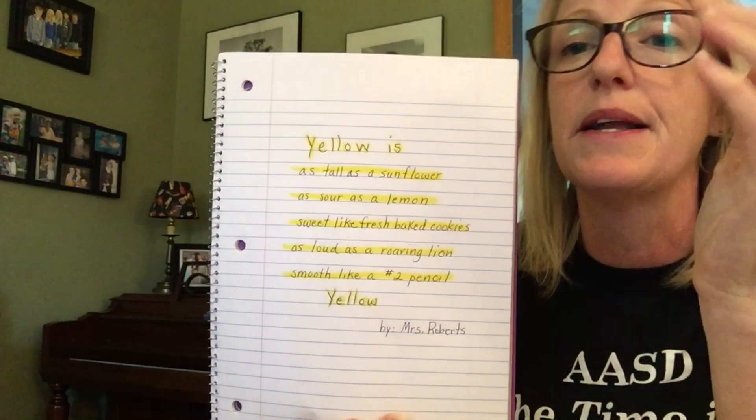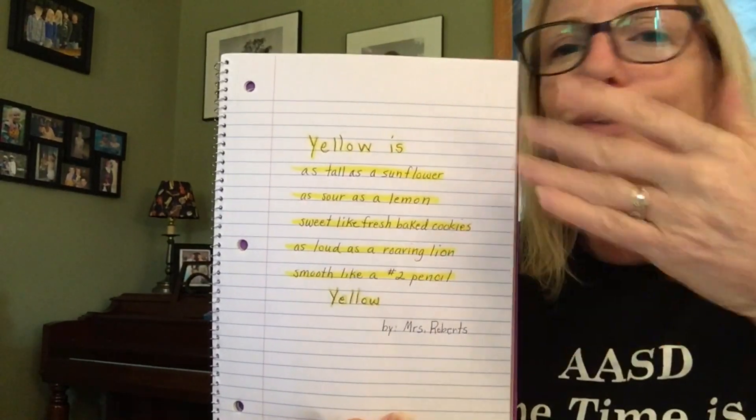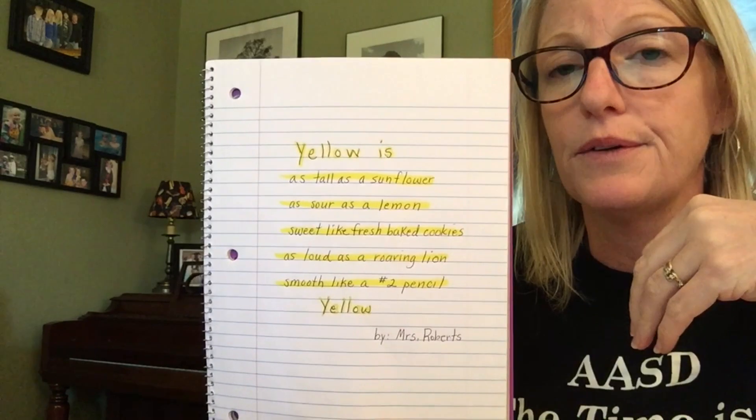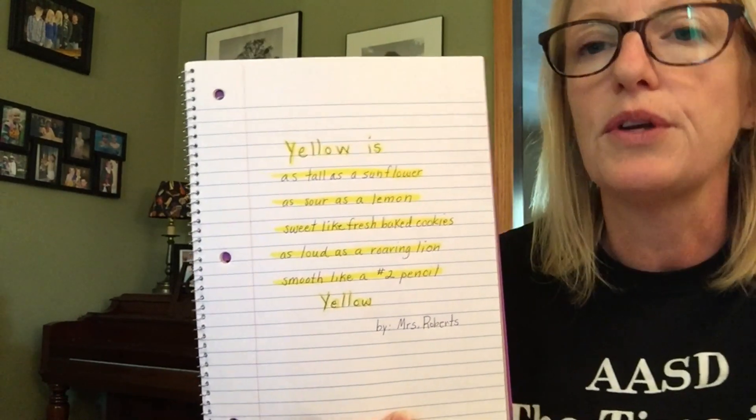Then we use our five senses in between — you can put them in any order that sounds great to you. You're going to make each of those lines a simile. Let me read mine to you. Remember, this isn't a rhyming poem at all — it doesn't have to rhyme. Yellow is as tall as a sunflower...